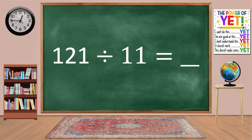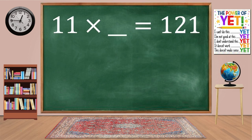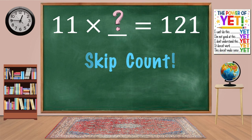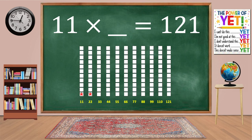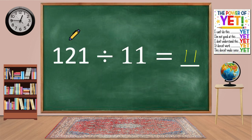121 divided by 11 equals blank. Our related fact is 11 times what equals 121. 11 times 11 equals 121. 121 divided by 11 equals 11.